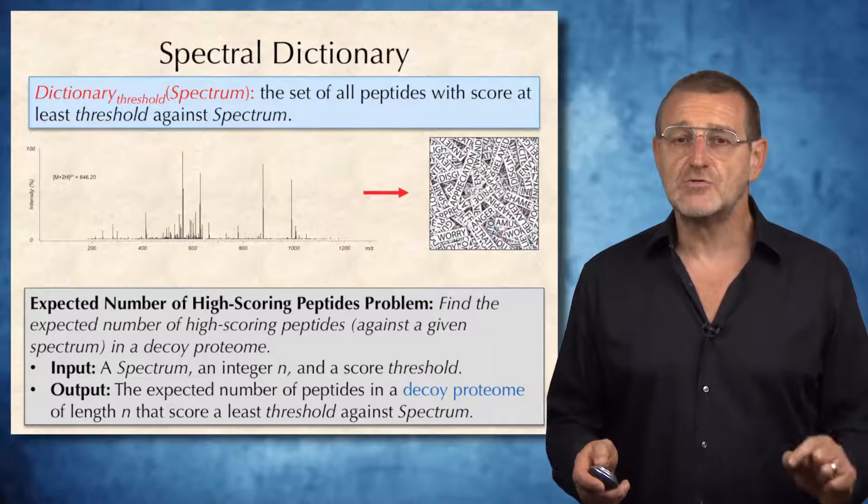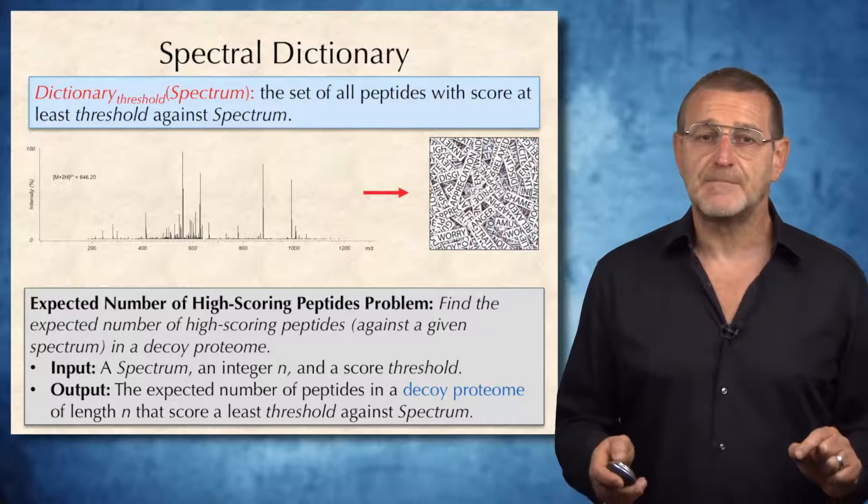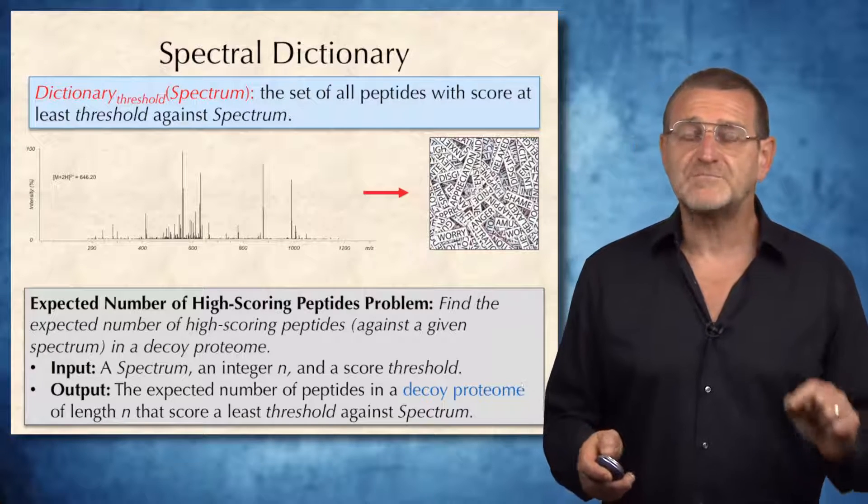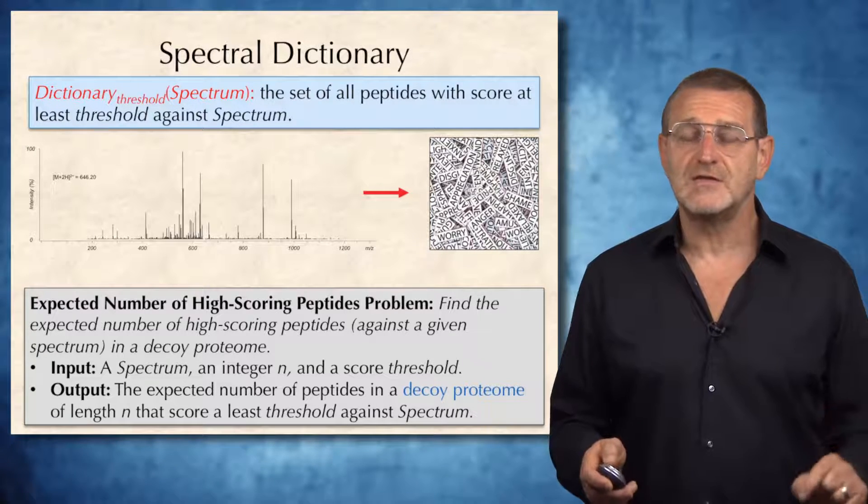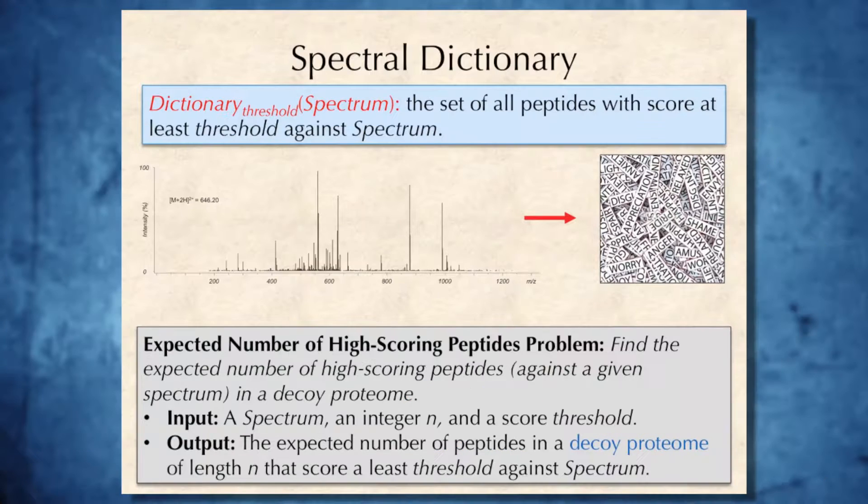Dictionary of spectrum under a given threshold is simply the set of all peptides with a score at least threshold against spectrum. There will be many of these peptides, and as soon as we generated the set dictionary for a given spectrum,